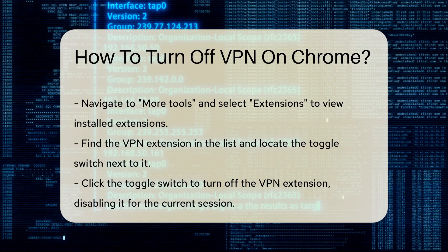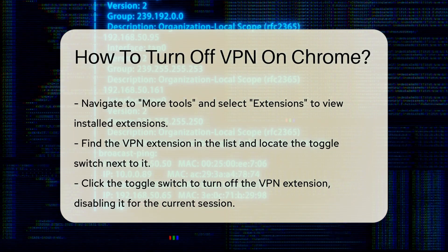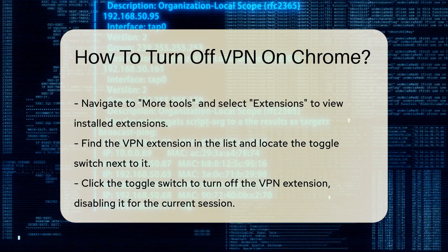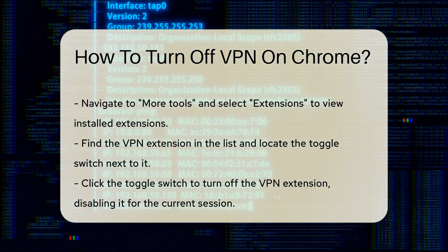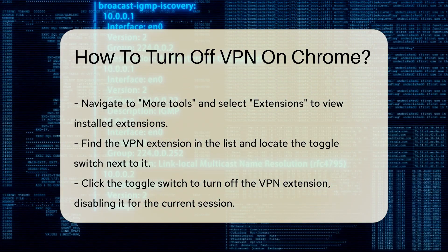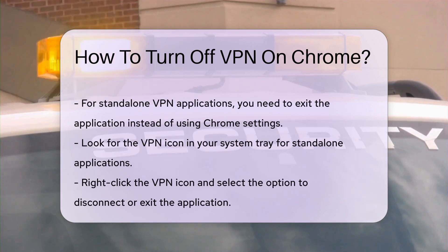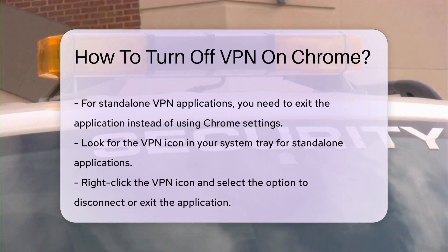Locate your VPN extension in the list. You will see a toggle switch next to it. Click the switch to turn it off. This action will immediately disable the VPN for your current browsing session.